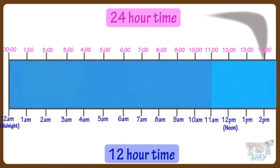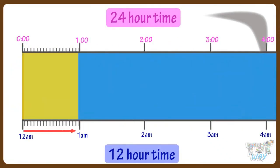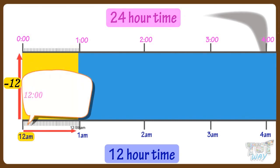From the time 12 a.m. to 12:59 a.m., subtract 12 hours. If the time is 12 a.m. — that is midnight — and you want to convert into the 24-hour clock system, subtract 12. So it will be 0 hour, that is the beginning of the day.